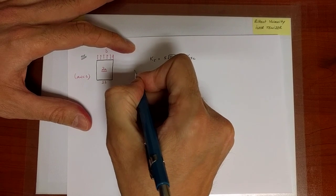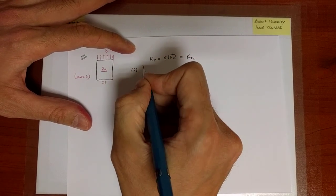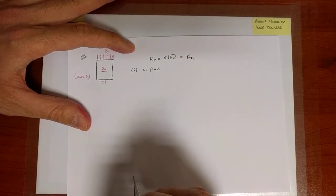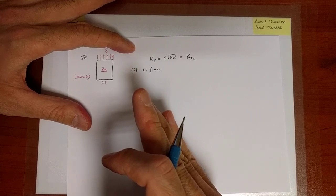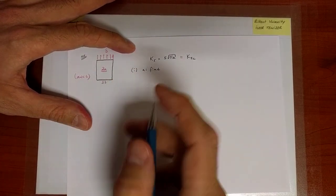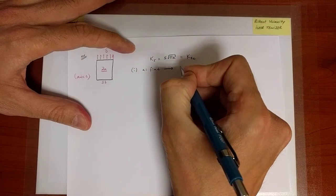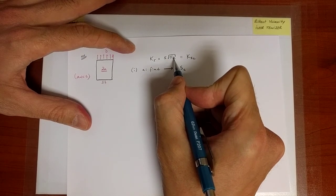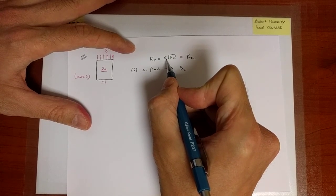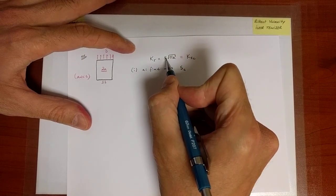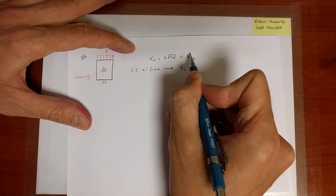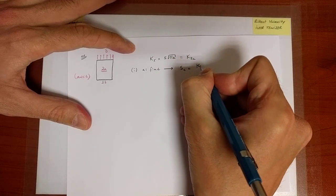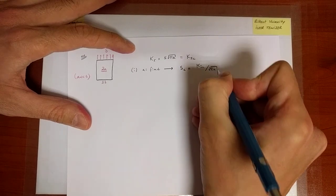The first scenario is when the crack size is fixed and we are interested in the largest force such that fracture does not happen — or simply the critical value of the force, SC, at which fracture occurs. For a given value of A, the critical stress is SC equals K_1C divided by the square root of pi times A.